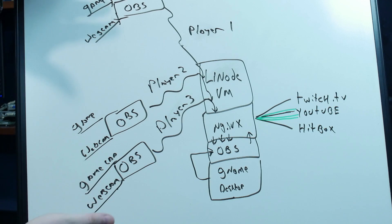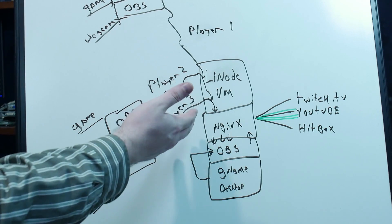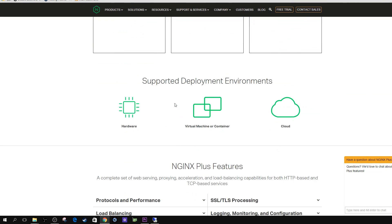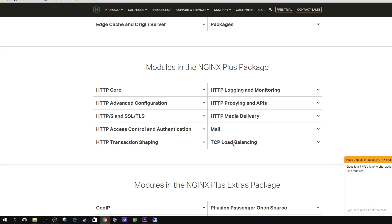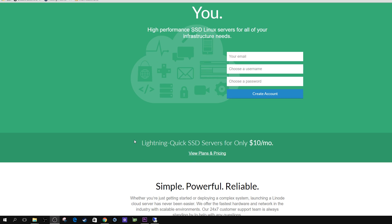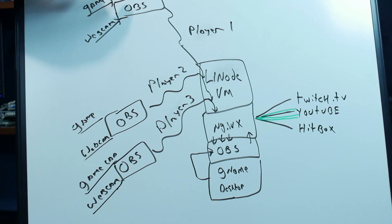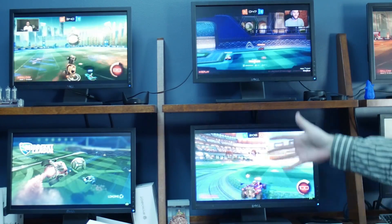It's multi-cam and multi-stream. These are the individual players that go into a Linode server or a Linode virtual machine - that's just a server on the internet running Nginx. Linode is a good option because you're going to need a ton of bandwidth for this part. Player 1, Player 2, and Player 3 are running their own local copies of Open Broadcaster, capturing both game footage and webcam footage, putting that into one RTMP video stream.